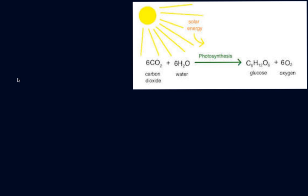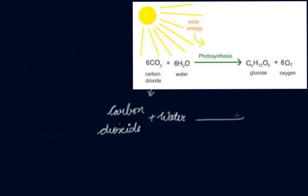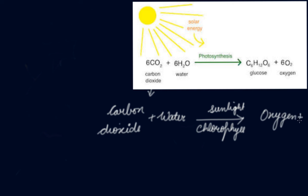Photosynthesis can be represented as: carbon dioxide plus water, in the process of sunlight and chlorophyll, gives oxygen plus carbohydrates. During the process, oxygen is released and the carbohydrates are ultimately converted into starch, which is utilized by the plants.